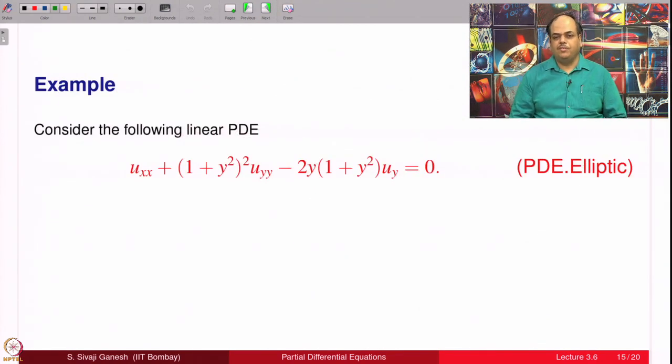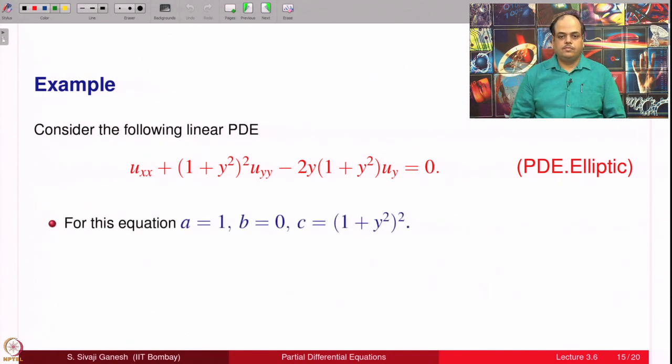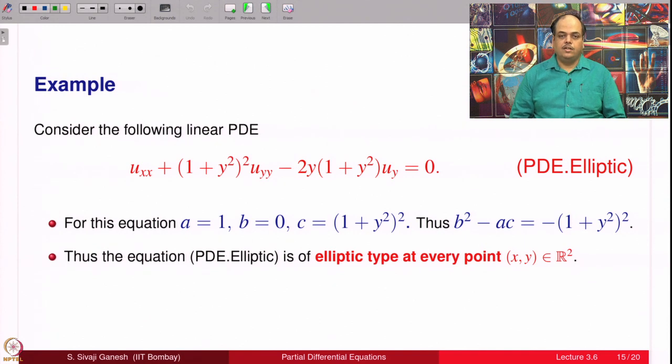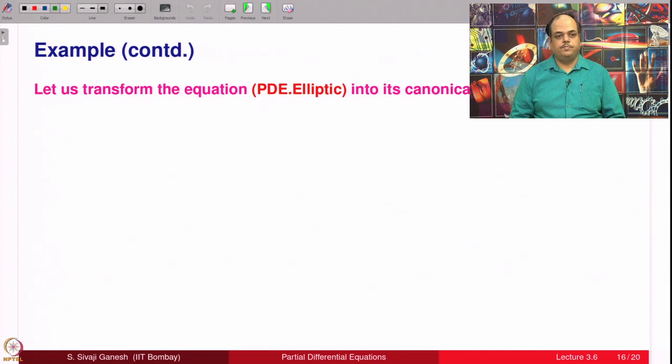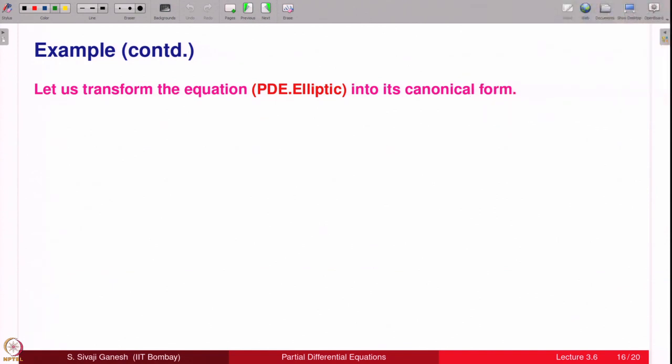Let us solve an example. Here you see we do not care whether it is analytic or not. Of course, here these functions—here it is a constant function 1, here it is (1 + y²)², a polynomial, here also it is a polynomial. Of course, it does not matter; we are worried only about coefficients of u_xx, u_yy, and u_xy. b² - ac is negative, strictly less than 0 at every point. Therefore, the equation is of elliptic type everywhere in the plane R².